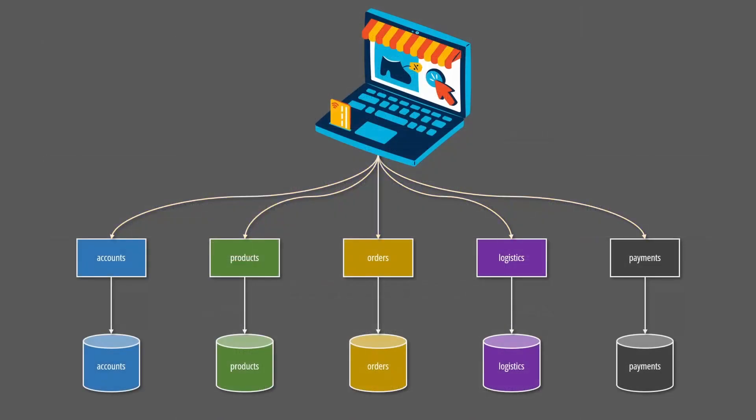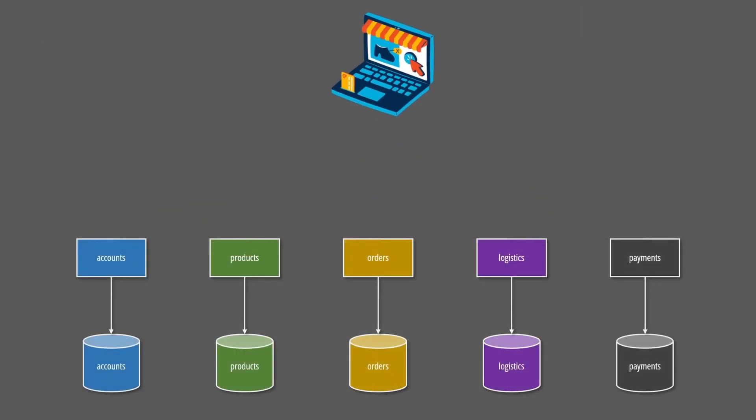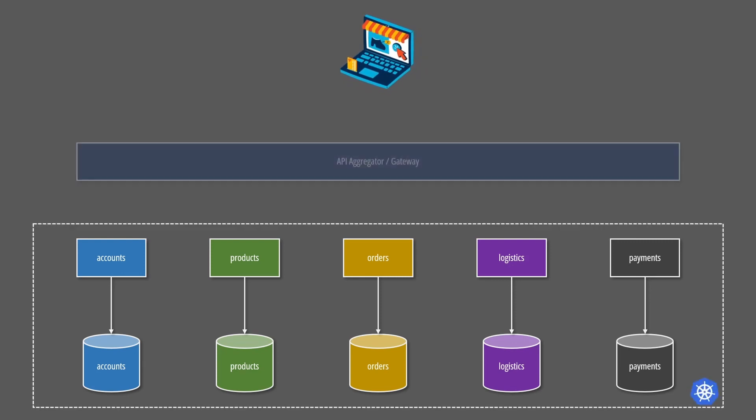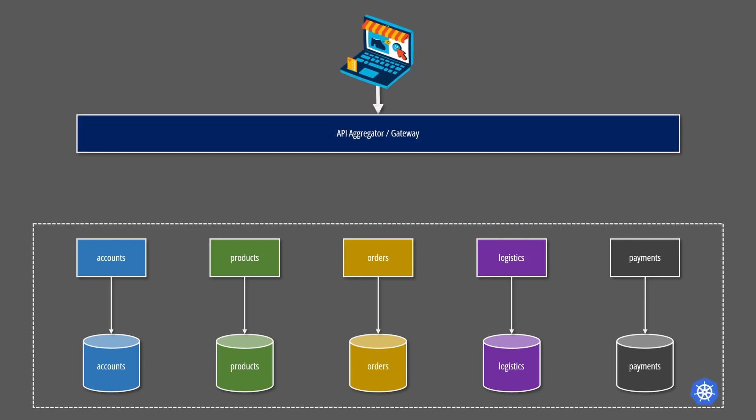To mitigate this issue, we can use the gateway aggregation pattern. The gateway is a service positioned at the edge of our system that aggregates multiple individual requests and exposes them as a single request. This way, we reduce chattiness between clients and the edge of our system, where poor connectivity is most probable.